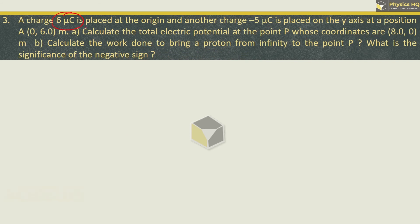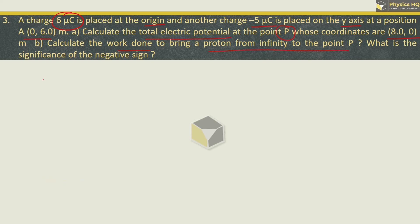Next sum: a charge of 6 micro coulomb is placed at the origin and another charge of minus 5 micro coulomb is placed on the y-axis at point A (0, 6 meter). Calculate the total electric potential at point P whose coordinates are (8, 0). Also calculate the work done to bring a proton from infinity to point P, and what is the significance of the negative sign.